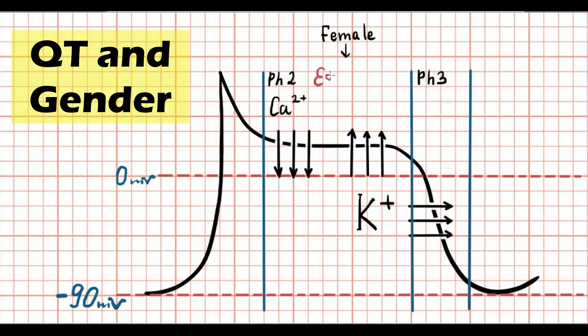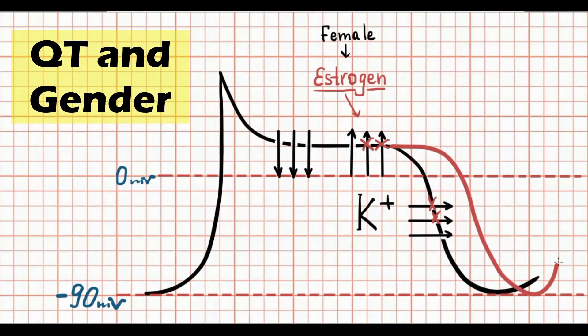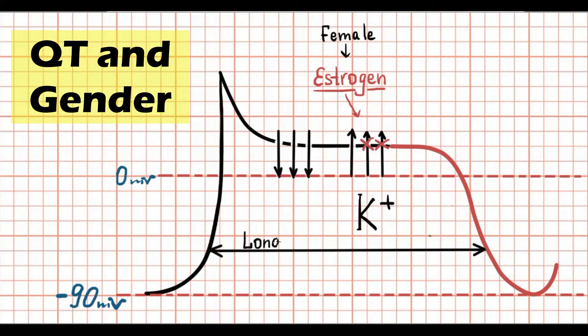Females have a high concentration of estrogen, and estrogen decreases potassium channel current. According to this, membranes tend positive for longer period of time. That leads to increasing of action potential width and longer QT interval. So females' QT is longer than males' QT.